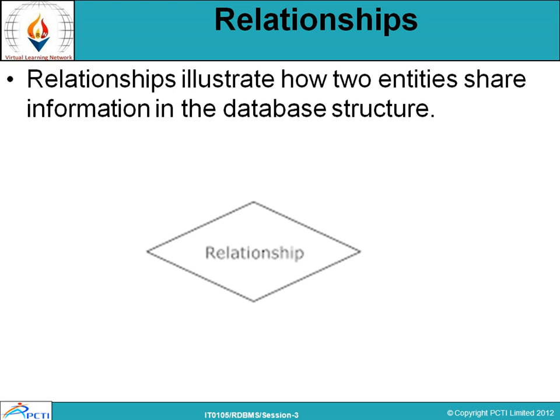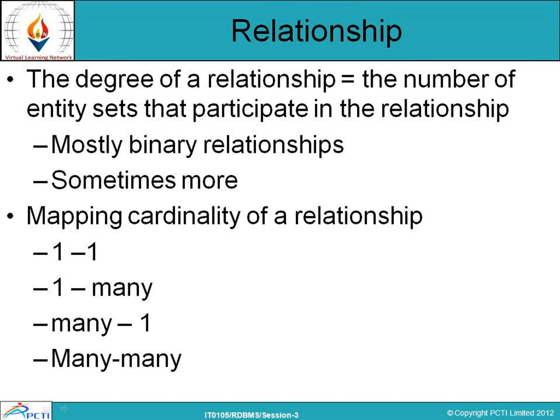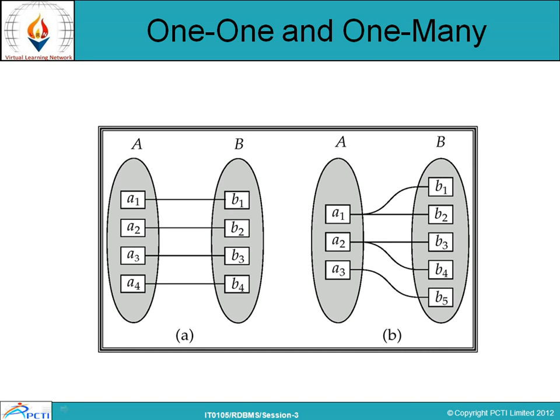Next, the relationship symbol: a relationship illustrates how entities share information in the database structure. The diamond box symbol represents the relationship between two or more entities. The degree of a relationship is equal to the number of entity sets that participate in it — mostly binary relationships, and sometimes more. The mapping cardinality shows the relationship between two entities: it can be one-to-one, one-to-many, many-to-one, and many-to-many.